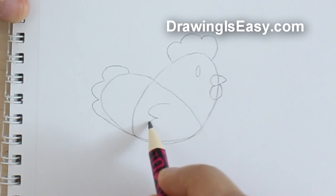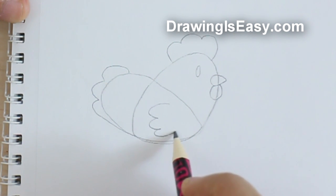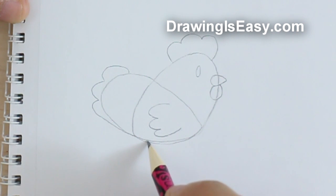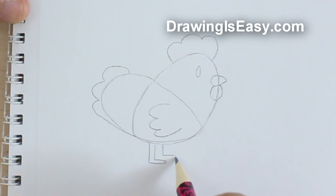Now we will draw the wing. For the wing, we will follow the same letter M, and then we will draw the feet by making a letter P. We will do the same thing for the other foot.